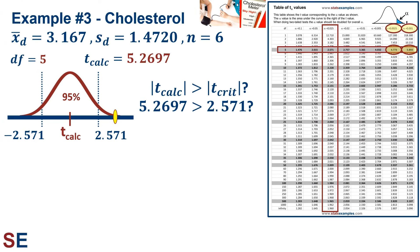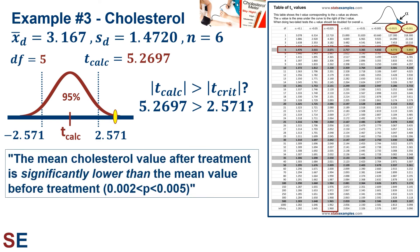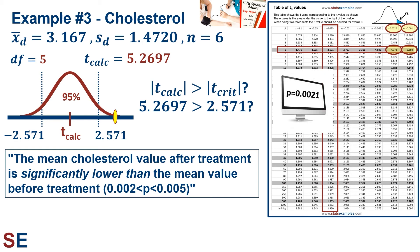We compare our t-calculated value of 5.2697 to t-values for 5 degrees of freedom. It's larger than 2.571, so the difference is significant. Continuing through the table, the calculated value falls between 4.773 and 5.893, corresponding to overall alpha values of 0.005 and 0.002. We state that the mean cholesterol after treatment is significantly lower than before treatment, with 0.002 < p < 0.005. A computer gives the exact p-value of 0.0021.